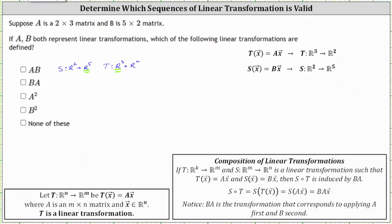Next we have BA. We first apply the transformation associated with matrix A, which is T from R3 to R2, and then the transformation associated with matrix B, which is S from R2 to R5. In this case, the codomain after the first transformation — R2 — is the same as the domain for the second transformation, which indicates the linear transformation given by BA is defined.